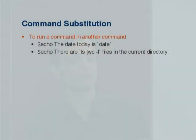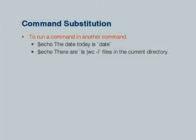Then we have something called command substitution. All of you must know the echo command by now. So echo 'the date today is' and then I put back quotes around the 'date' command. Date is a command which shows the present date. When you use it within back quotes, it actually prints the date there — it executes that command. If you recollect the for loop we used, that $(seq 1 9) was also a command substitution. And another command: ls | wc -l — ls will list all the files and wc -l will count the number of lines in that output, giving the number of files.